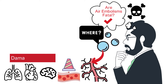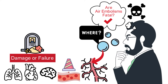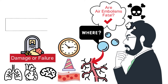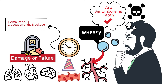This can lead to organ damage or failure, and if not treated promptly, death. The time until an air embolism becomes fatal can vary widely and depends on several factors, including the amount of air — larger volumes are more dangerous — the location of the blockage, since an embolism in the brain, heart, or central circulatory system is more immediately life-threatening than in smaller peripheral vessels, and the patient's age and overall health. Fatal outcomes can occur within minutes if the embolism is significant and blocks major blood vessels.